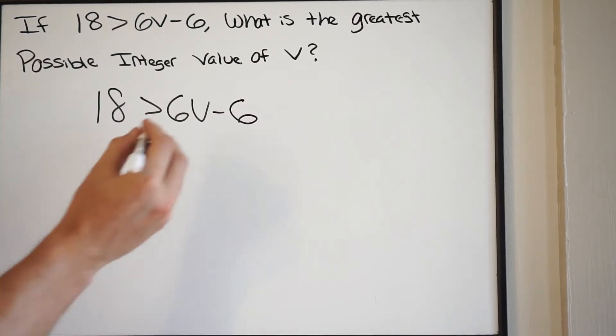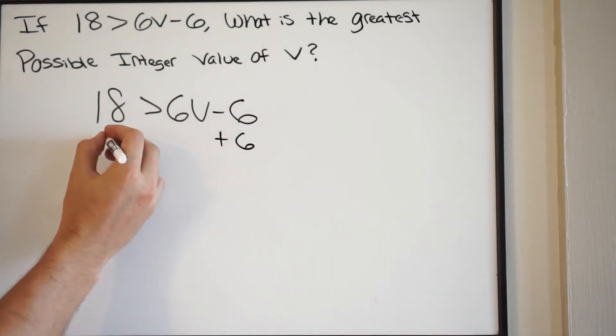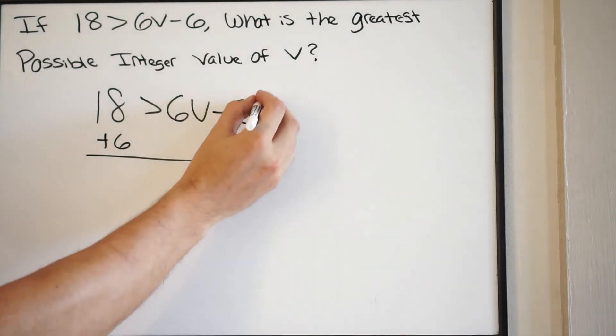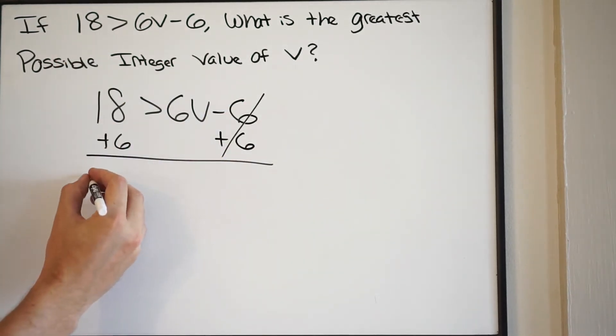So let's go ahead and add 6 on both sides. This is going to give us 24. Then we have greater than 6v.